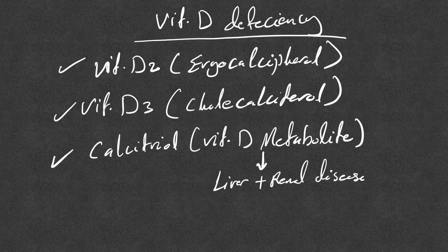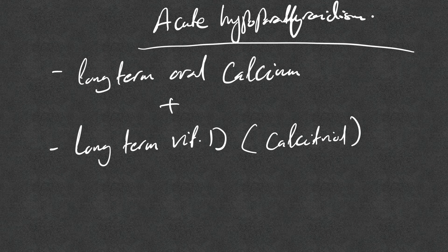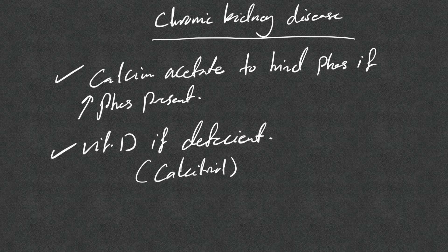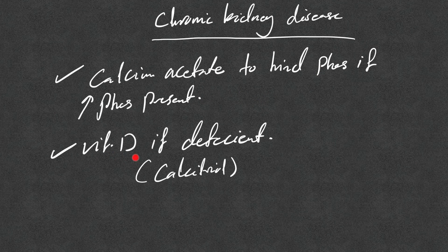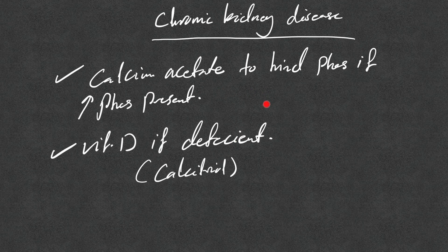In acute hypoparathyroidism, after IV calcium treatment, long-term oral calcium and calcitriol are needed. In chronic kidney disease with high phosphorus, calcium acetate is given primarily to bind phosphorus — reducing phosphorus lowers free calcium indirectly. Calcitriol is preferred because vitamin D2 and D3 require renal metabolism, which is impaired. The same rationale applies to chronic liver disease.